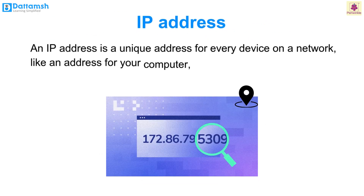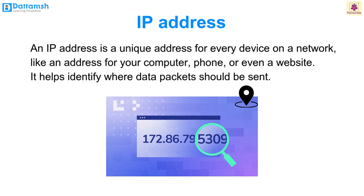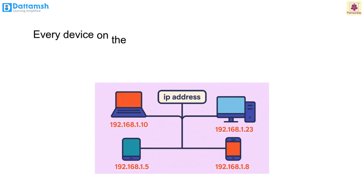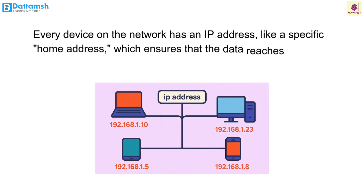IP address. An IP address is a unique address for every device on the network — like an address for your computer, phone, or even a website. It helps identify where the data packets should be sent. Every device on the network has an IP address, like a specific home address, which ensures that data reaches the correct device.